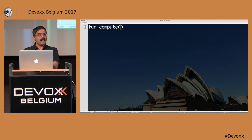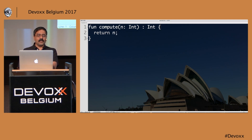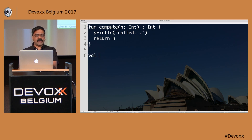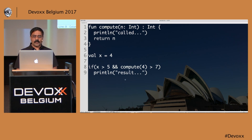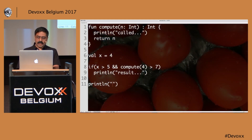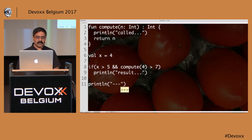To understand laziness, let's say we have a method called compute that takes an integer n, prints 'called', and returns n. If x = 4 and I check 'if (x > 5) { if (compute(4) > 7) println(result) }', you know it's not going to print the result. And it's also not going to call the compute method because it's short-circuited — which is nice.